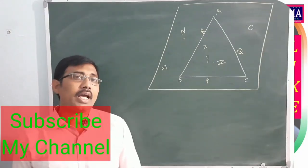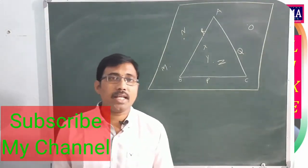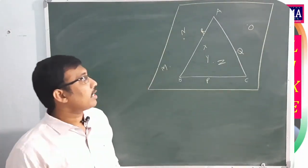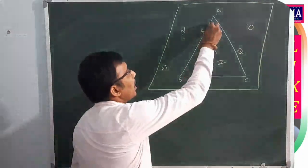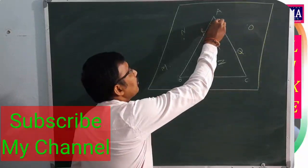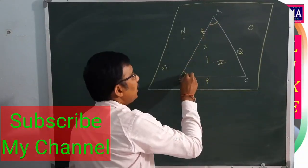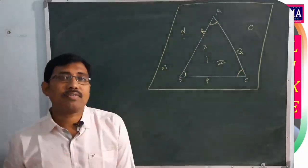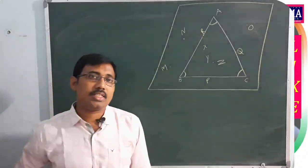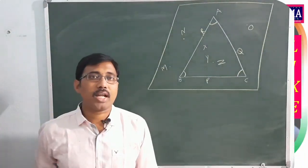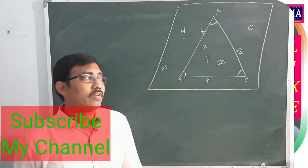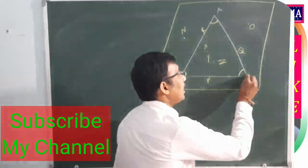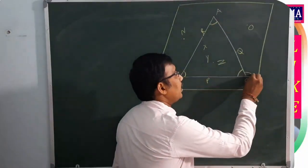Next: interior and exterior angles of a triangle. Observe the figure. Angles A, B, C are the three interior angles of the triangle. When any side is extended outside the triangle, an exterior angle is formed. Extending a second side also forms an exterior angle.